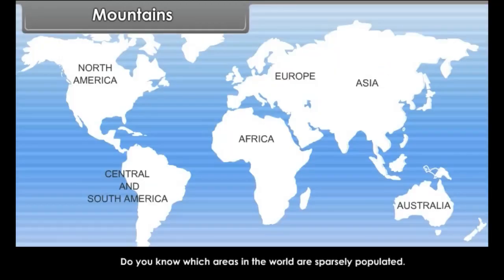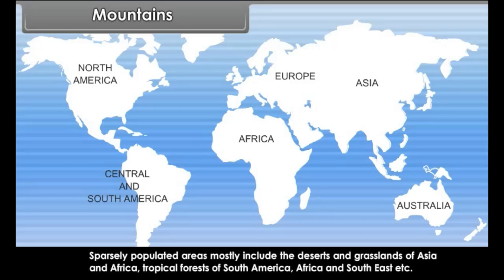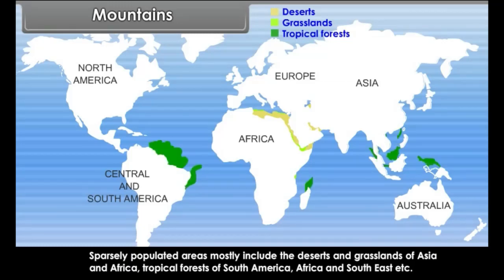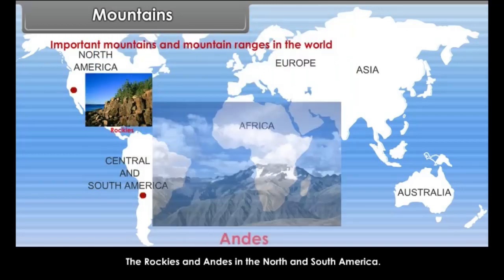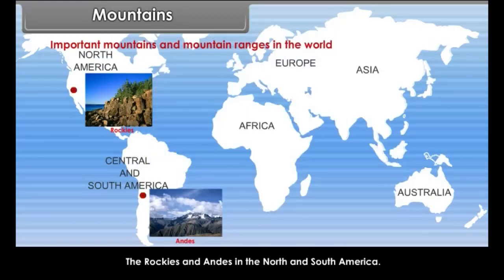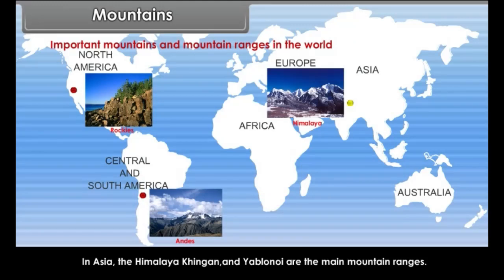Sparsely populated areas mostly include the deserts and grasslands of Asia and Africa, tropical forests of South America, Africa and South East Asia, etc. Some of the important mountains and mountain ranges in the world include the Rockies and Andes in North and South America. In Asia, the Himalaya, Kingan, and Yablone are the main mountain ranges.